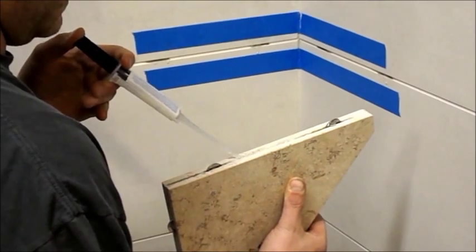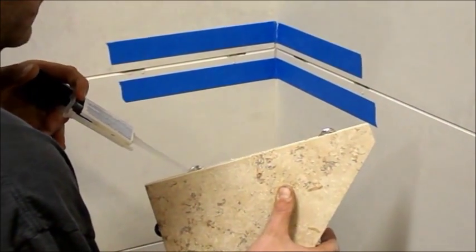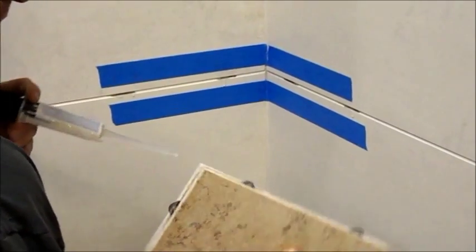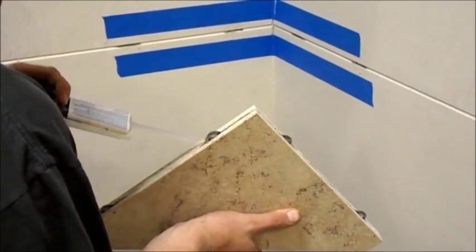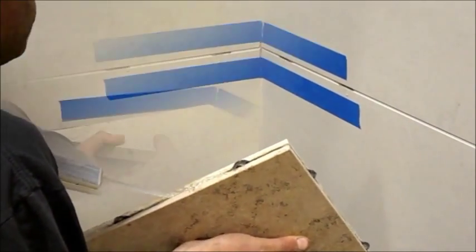As well as some on the back edge of the shelf as shown. Make sure to have plenty of epoxy so that you ensure good contact between the shelf, the mounting tabs, and the wall.